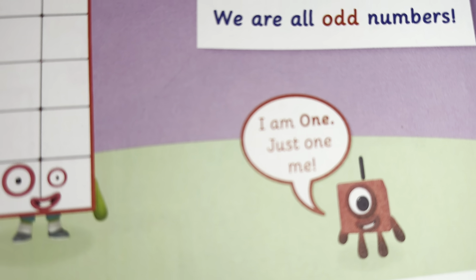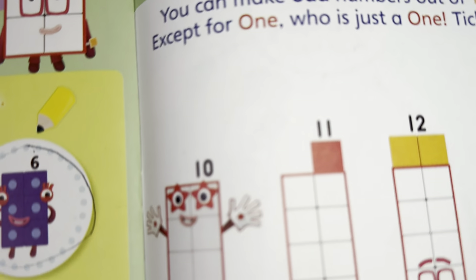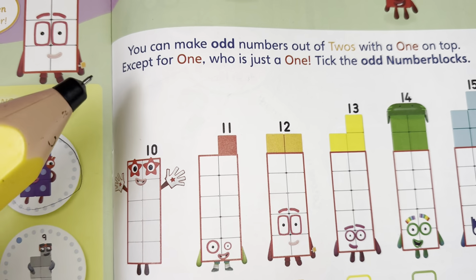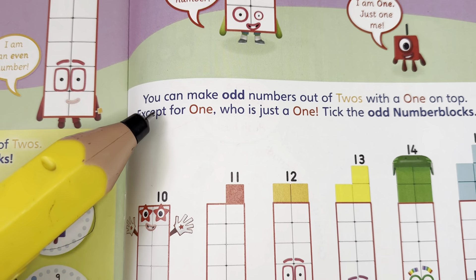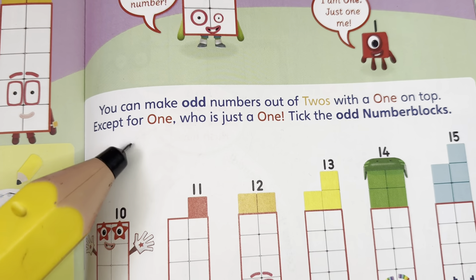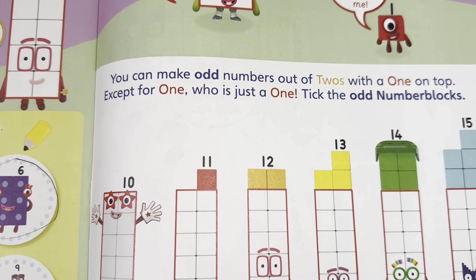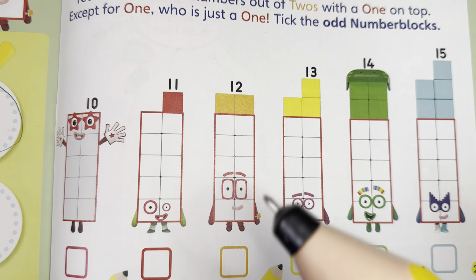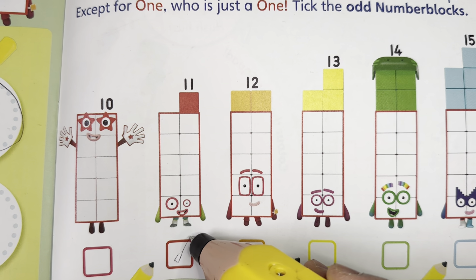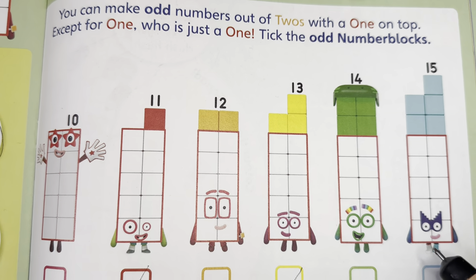Well, I am one. Just one me. Now let's go to another example. You can make odd numbers out of twos with a one on top, except for one, who is just a one. Let's tick the odd number blocks. And the correct answers are 11, 13, and 15.